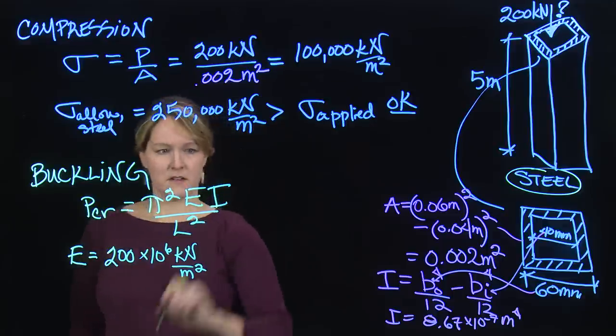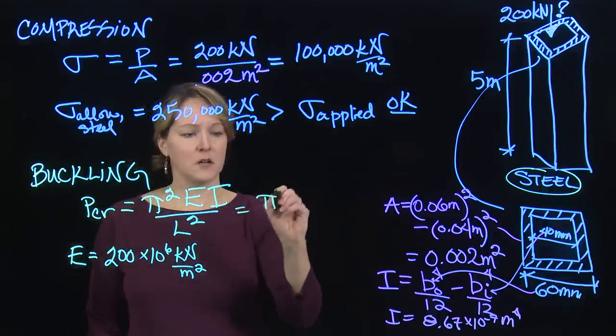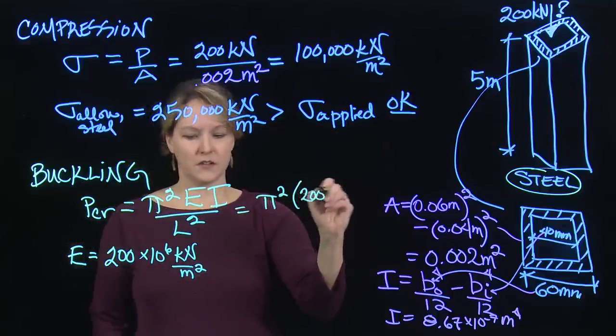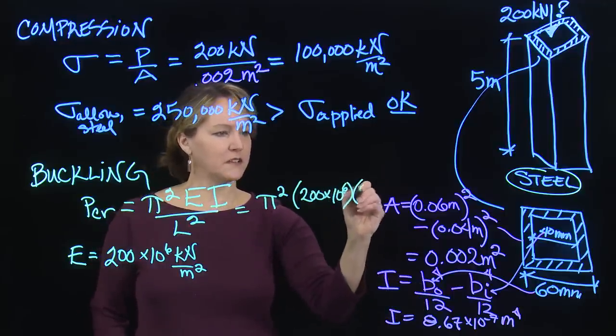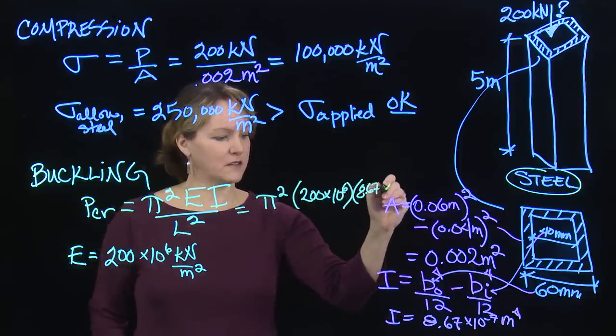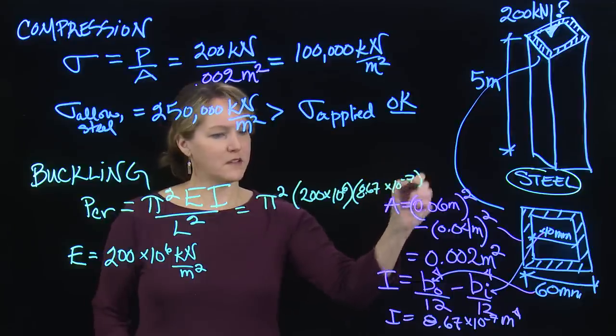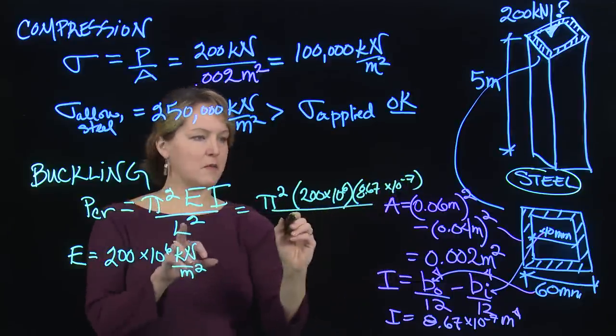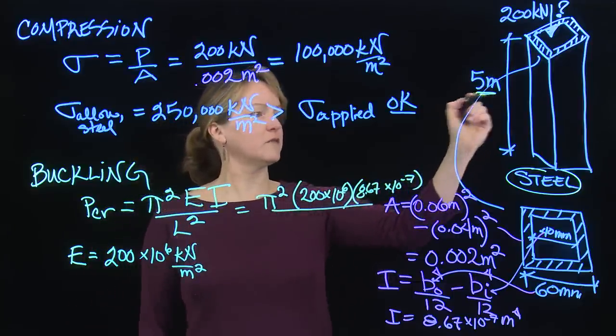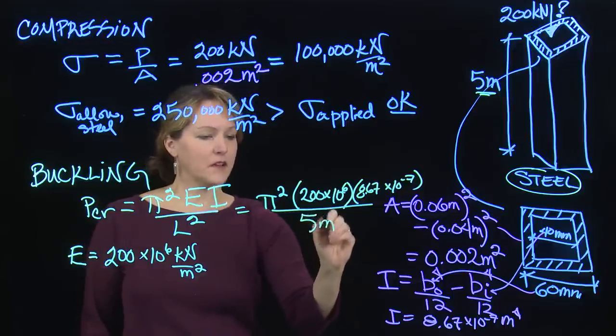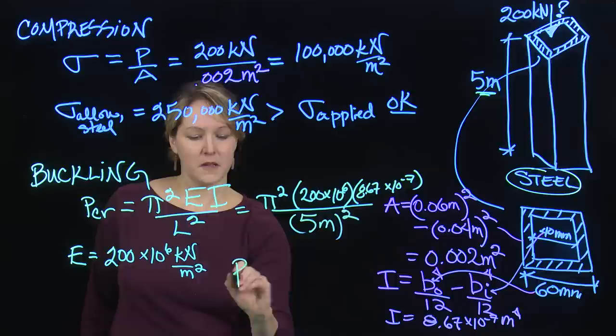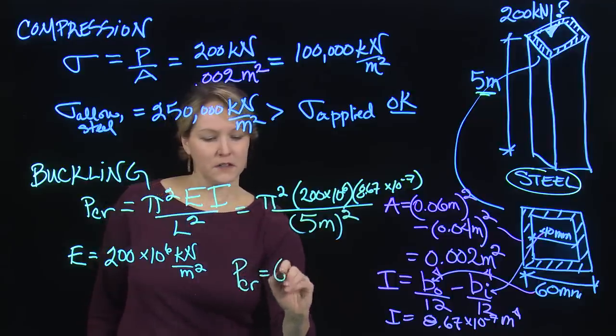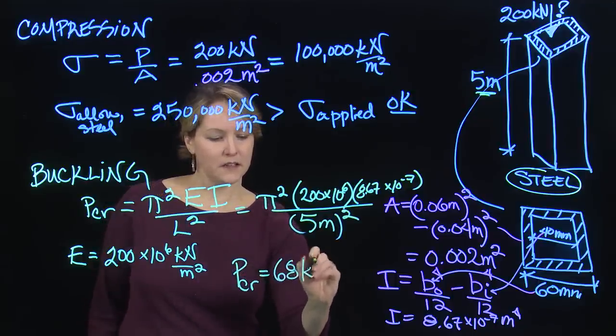So now back to my equation. I have pi squared times 200 times 10 to the 6th, times this moment of inertia, 8.67 times 10 to the minus 7th. And that's all divided by my length squared. In this case, it's 5 meters. 5 meters squared. And that will allow me to calculate this P critical.